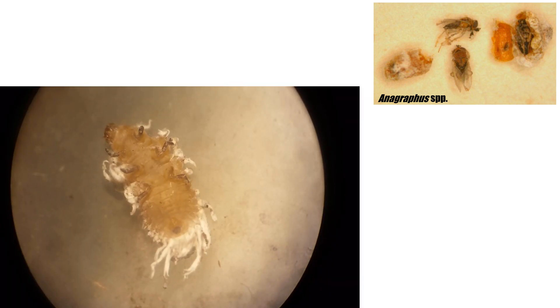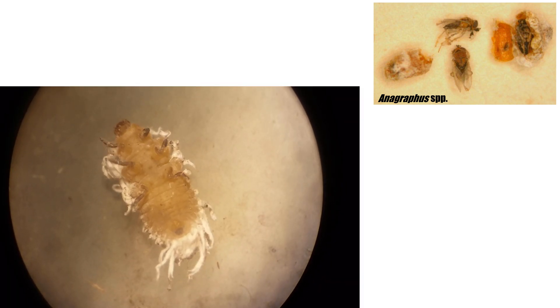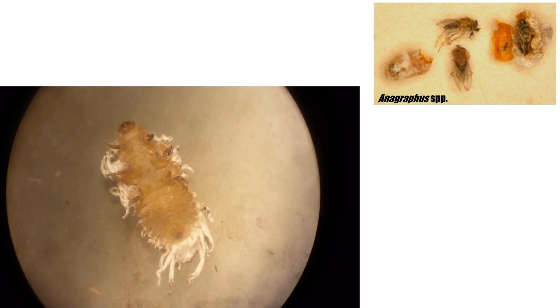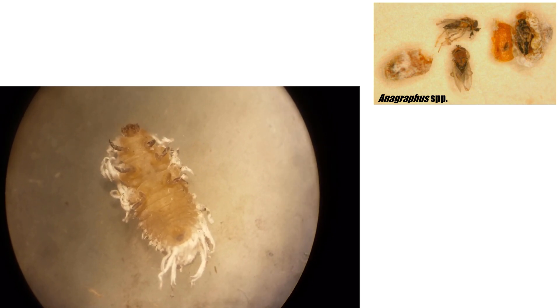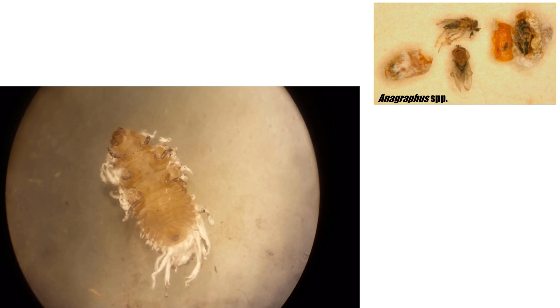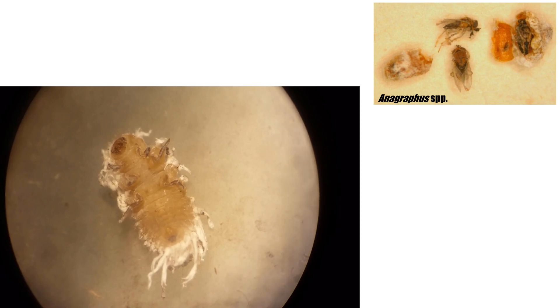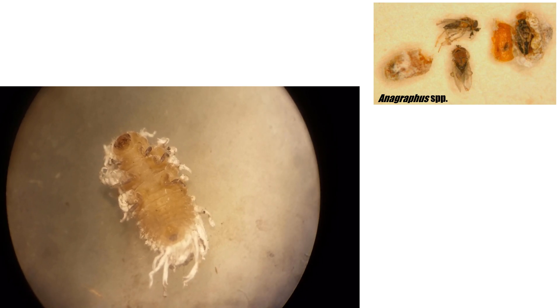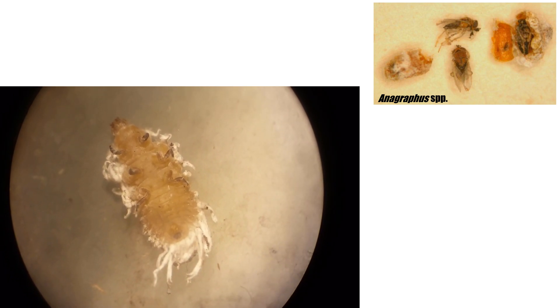A waxen, hydrophobic coating covers the female body, which resists many water-based treatments, often necessitating the use of surfactants or biocontrol agents like Cryptolaemus montrouzieri, the mealybug destroyer. In Arizona, parasites like those in the genus Anagyrus are commonly encountered naturally or produced commercially.